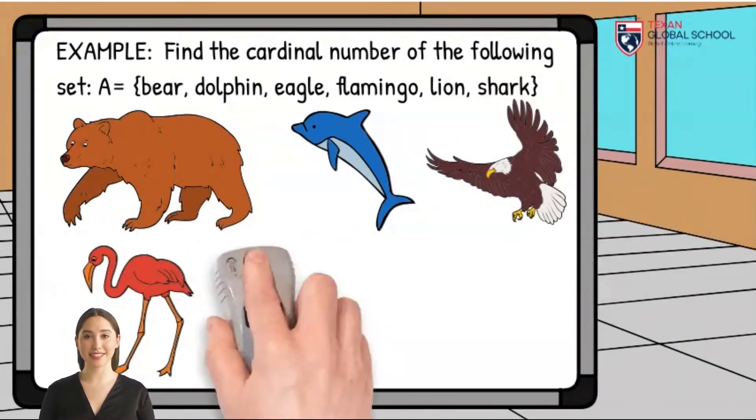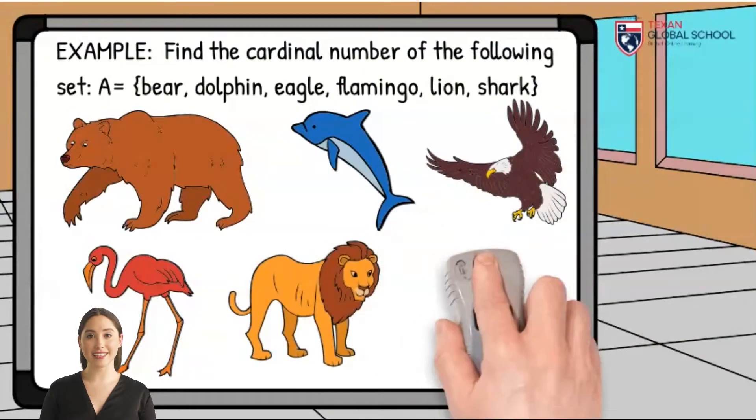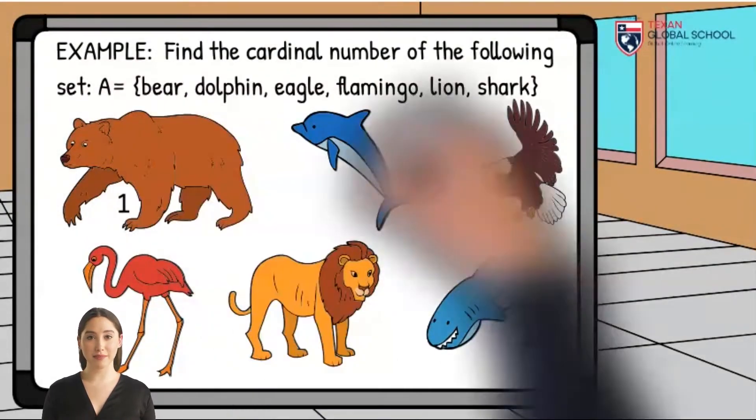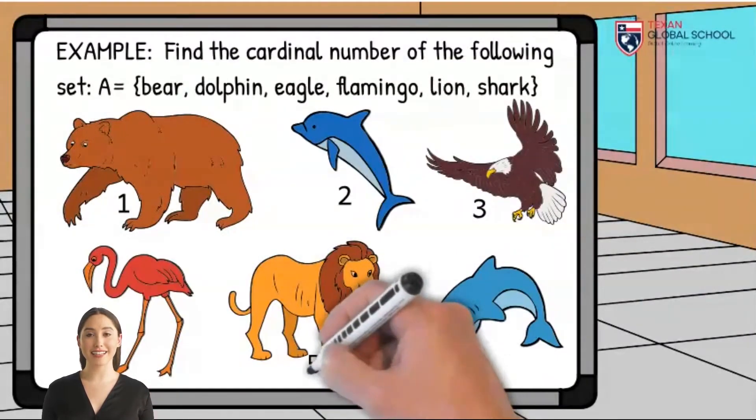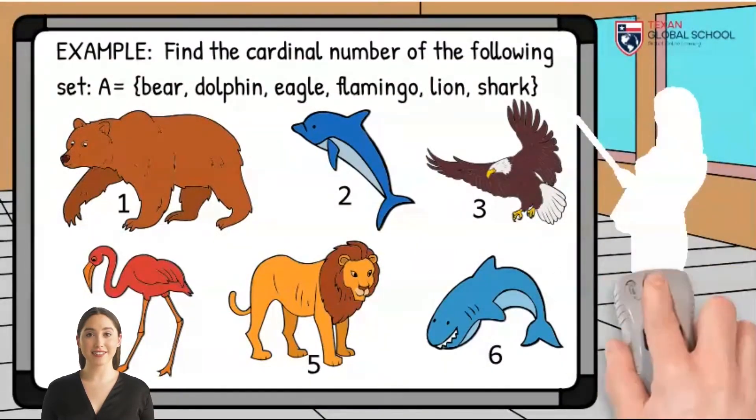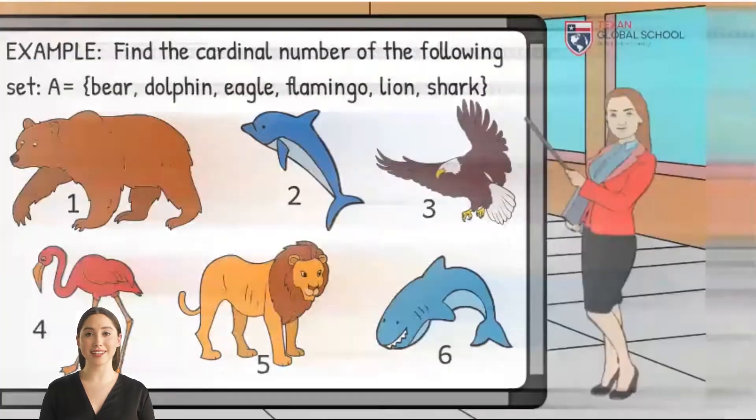As we can see, the set A represents an X number of animals. So we proceed to count them. In this way, we conclude that the cardinality of the set A is equal to 6, since it's the number of elements that make up that set.